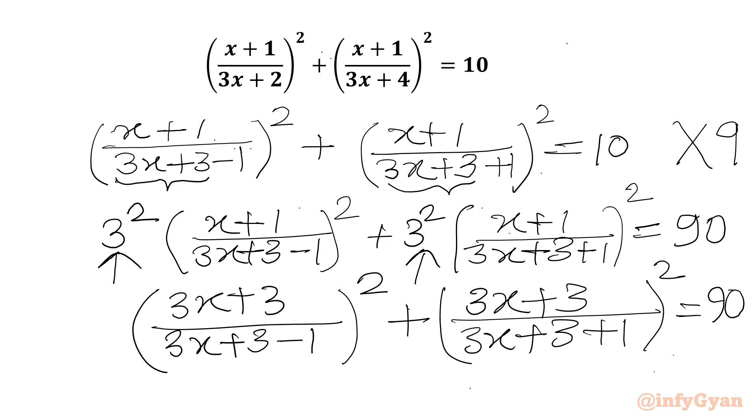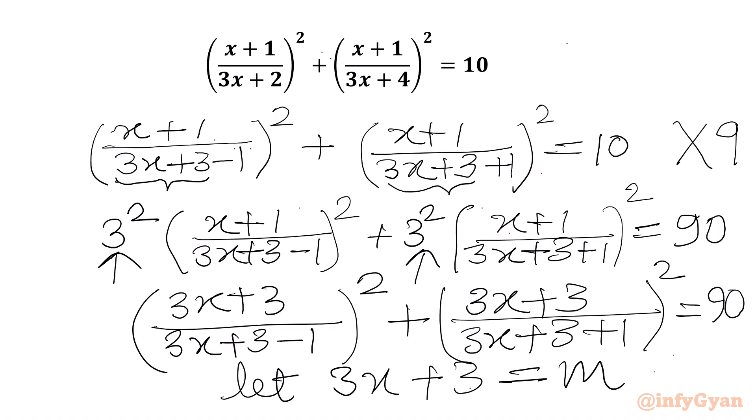Now we can consider: let 3x+3 equal to m. So we can write our equation in m as (m/(m−1))² plus (m/(m+1))² equal to 90.